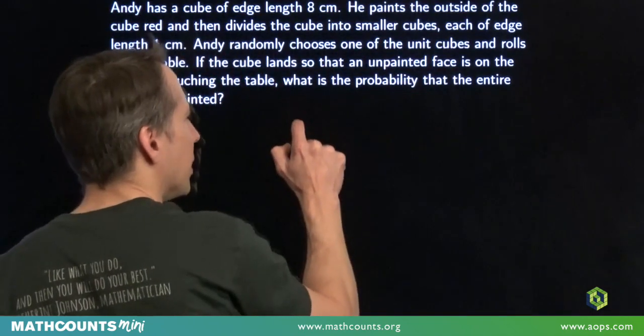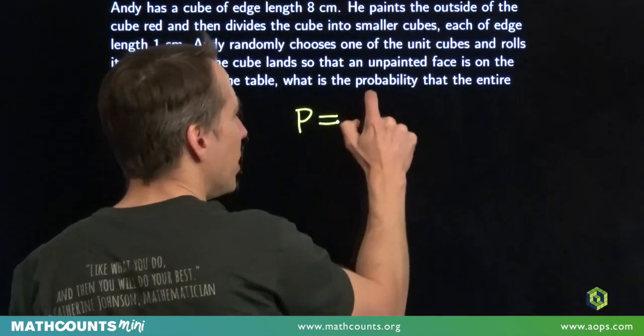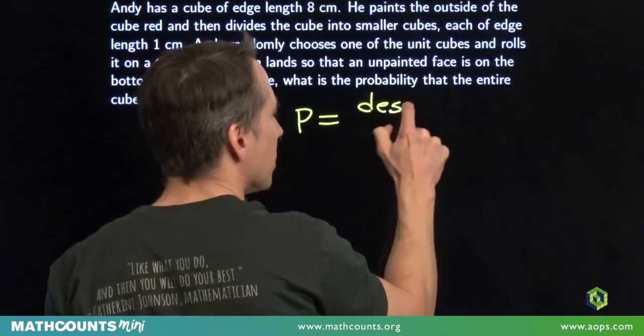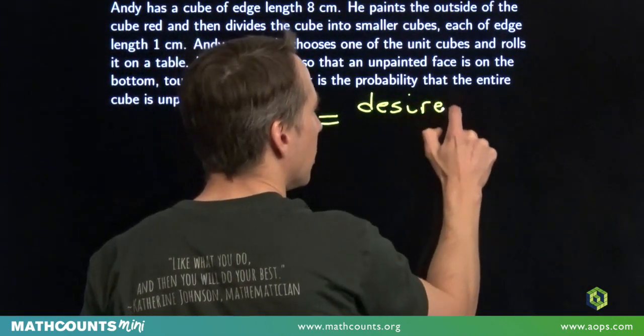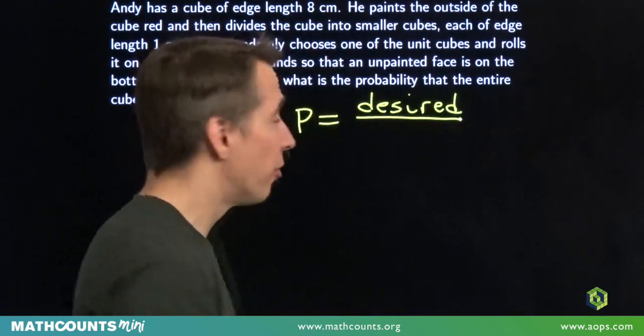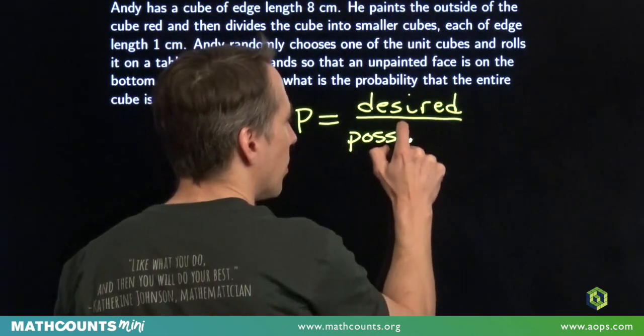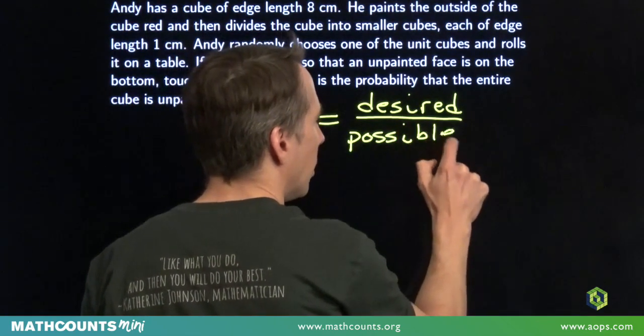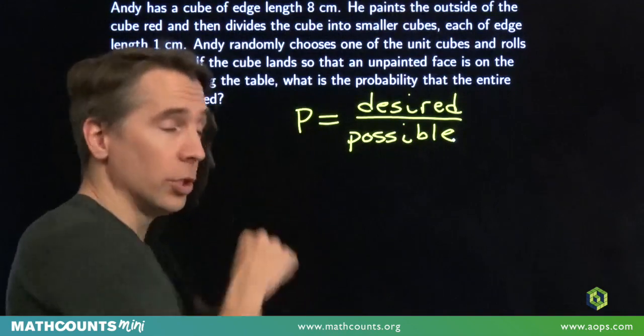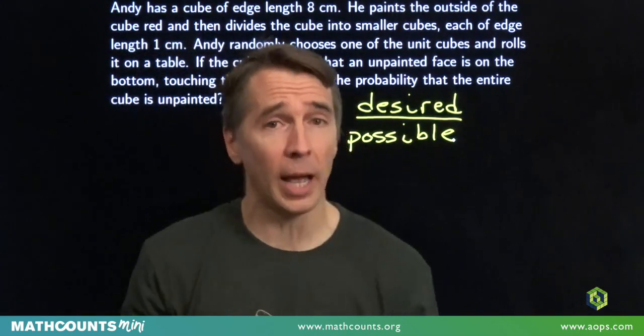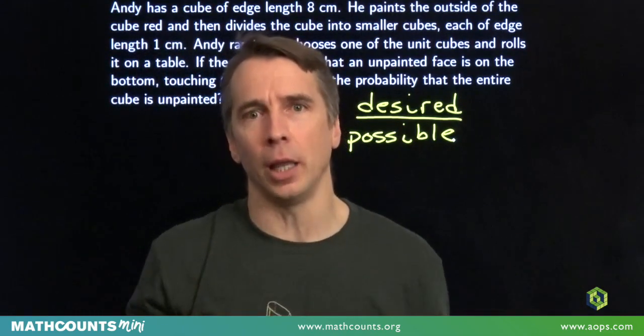Now usually, in a probability problem like this, we count up the number of desired outcomes, and then we divide that by the number of possible outcomes. It's very important when we're doing this that those outcomes we're talking about, that they're equally likely.